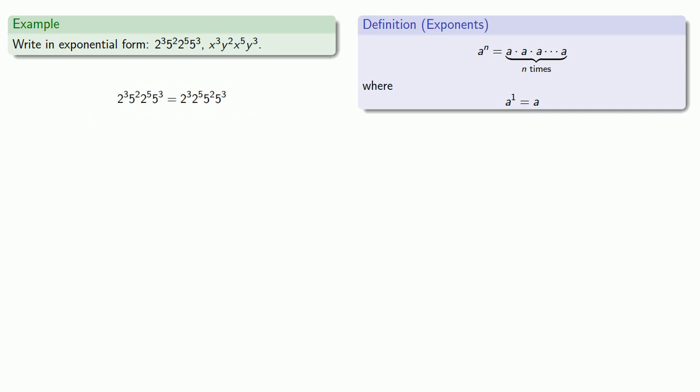Then we see here that we have 3 factors of 2, 5 more factors of 2, and so all together we have 8 factors of 2, which is 2 to power 8.